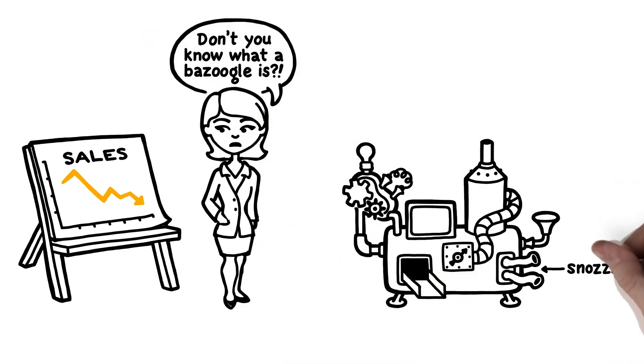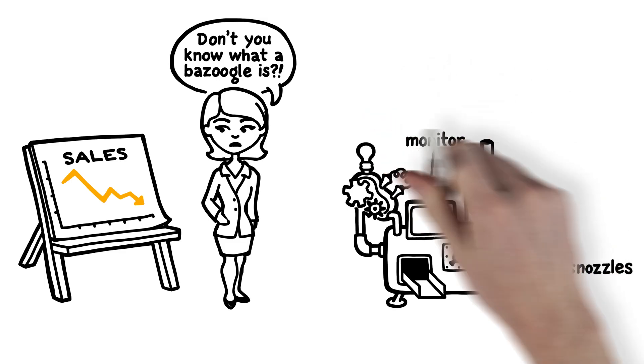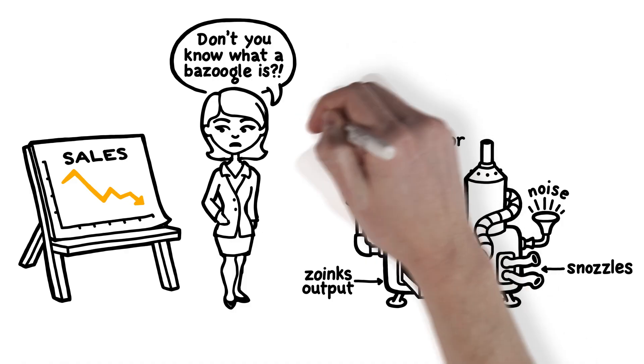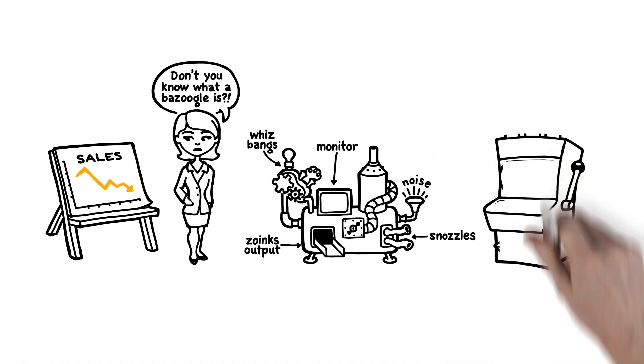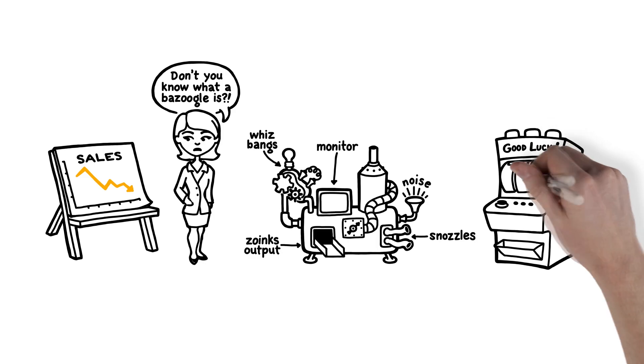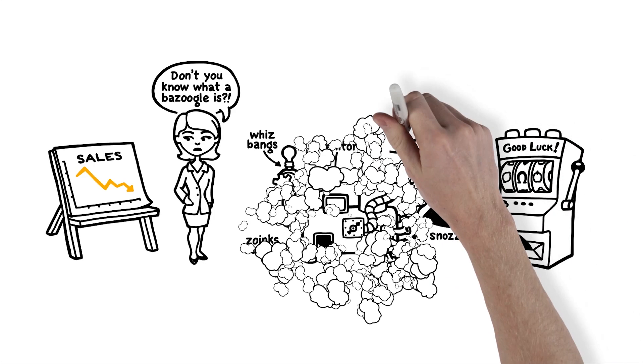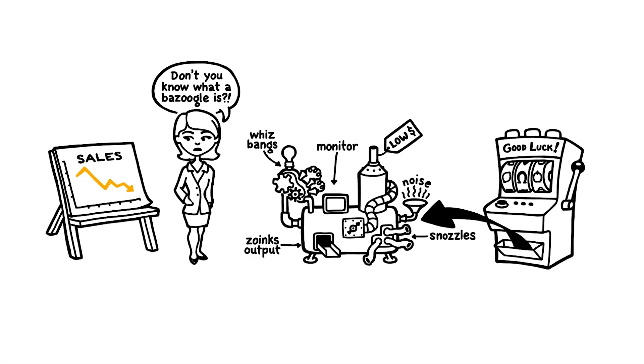Bazoogles can have two to four snozzles, large or small monitors, and varying levels of noise, zoinks, and whiz bangs. The problem is there are thousands of combinations of features and Jane needs to come up with the right combination at the right price to regain market share.